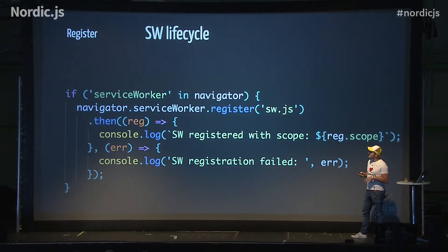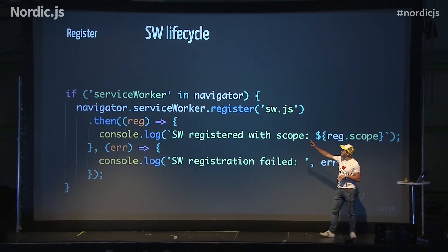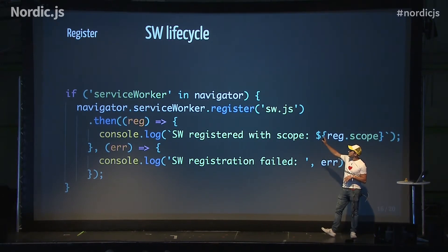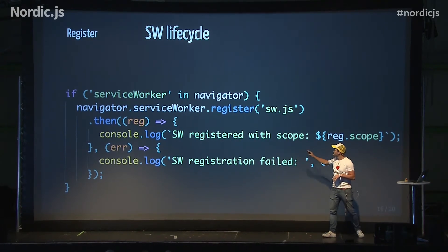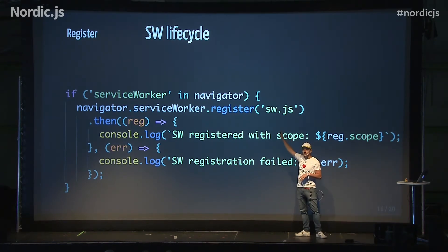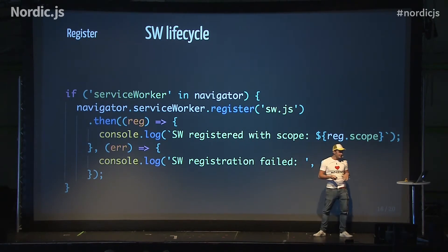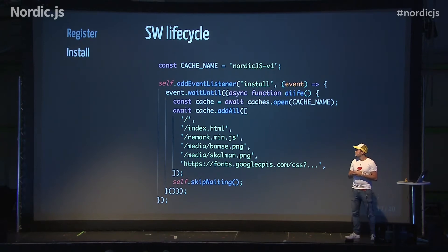The first thing we have to do with our service worker is register it on the web page. We check if there's support for it, then we call the register method with the path to our service worker. We get back a promise that resolves the registration with a scope — and the scope defines what parts of the page we can control. This service worker is at the top level, so it can control all levels below.